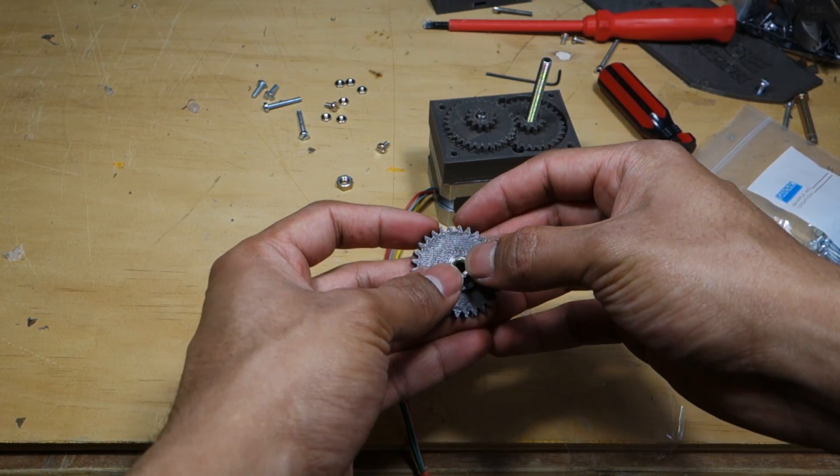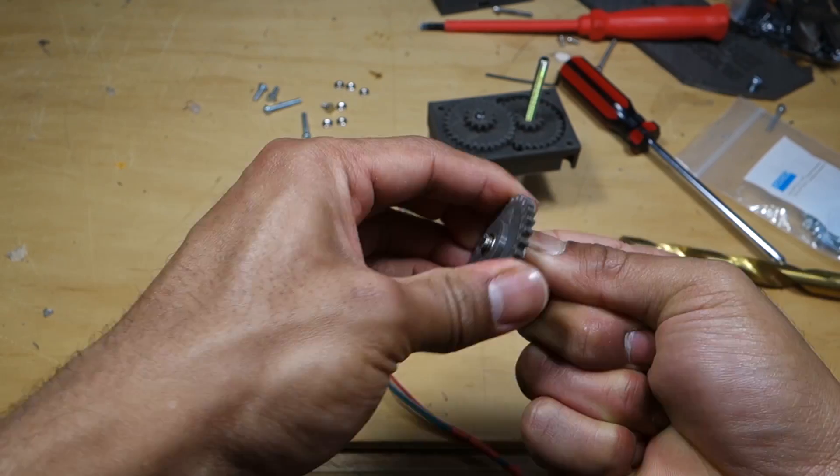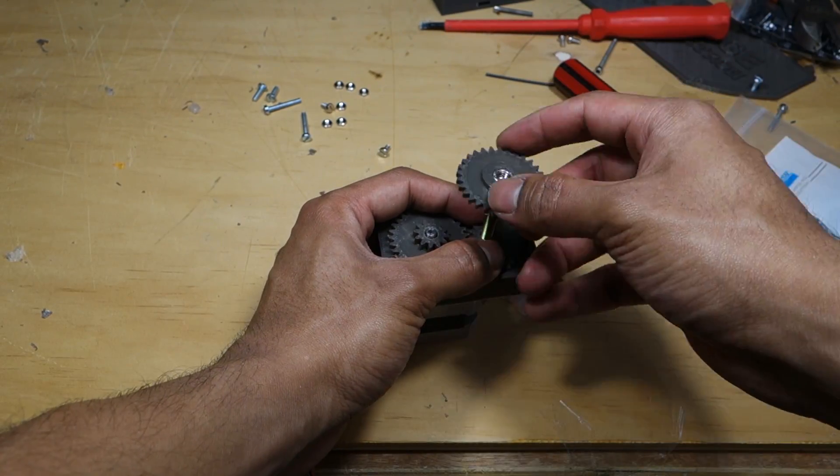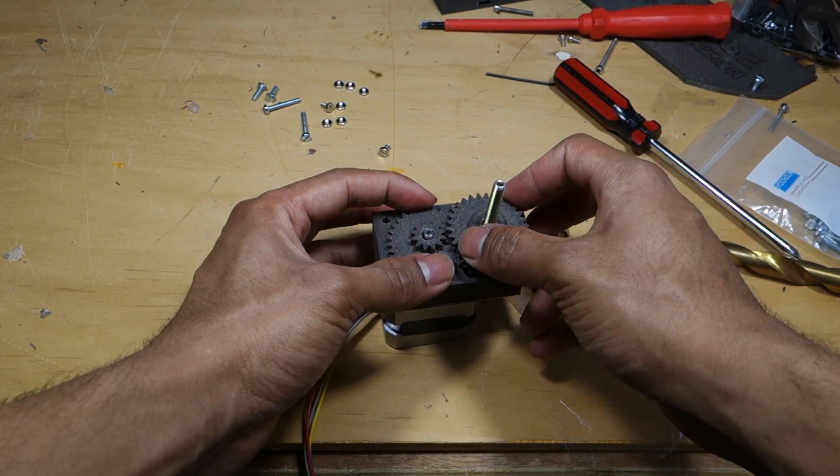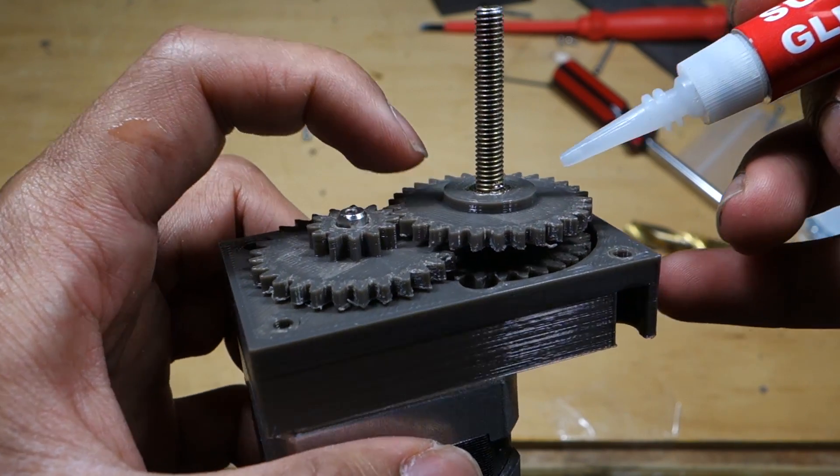Push an M5 nut onto the output pinion gear. Screw the gear and nut down the bolt until it's in place and engaging with the previous spur gear. Once it's in place, use a tiny drop of super glue to secure it to the bolt shaft.